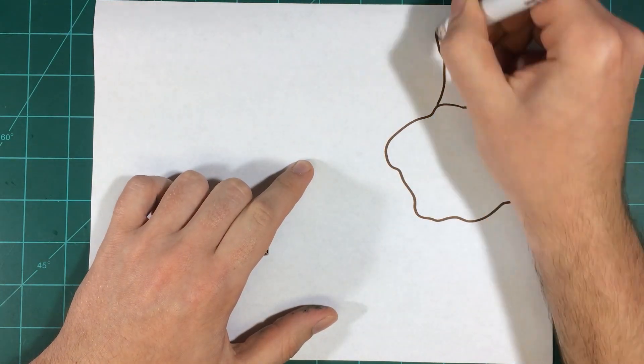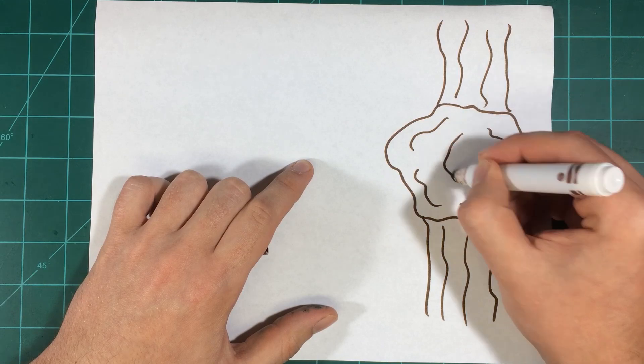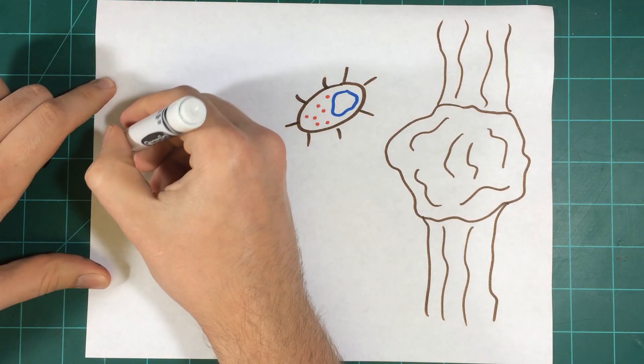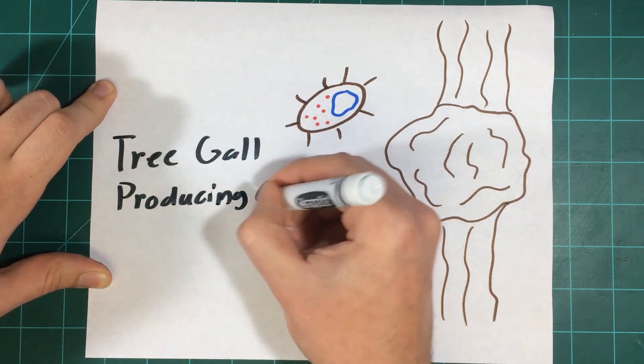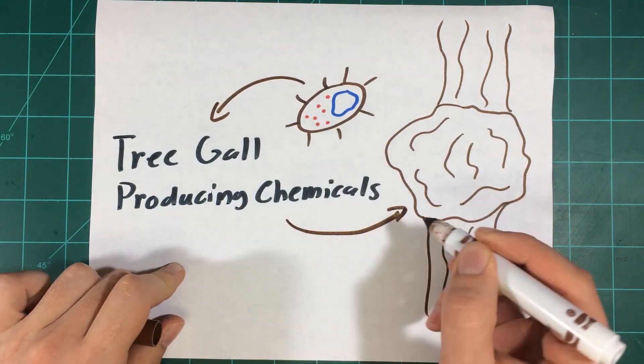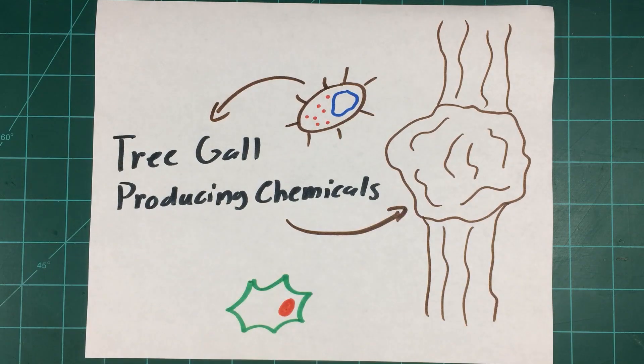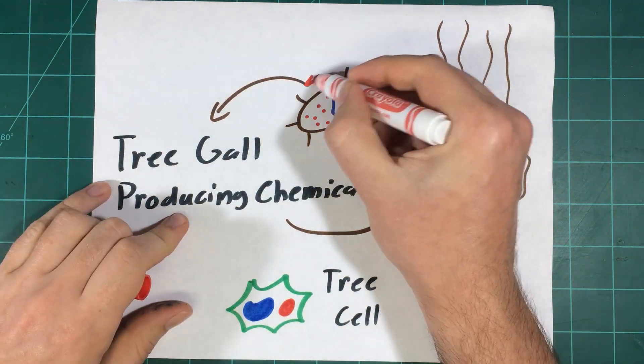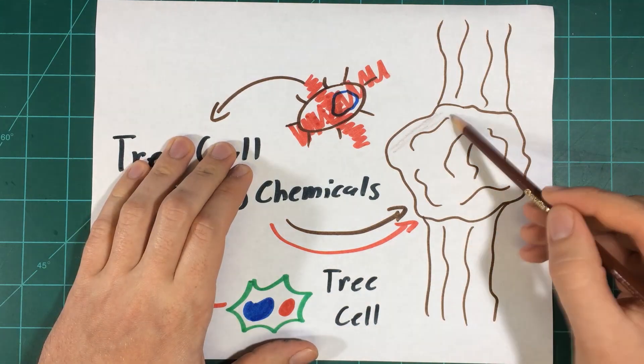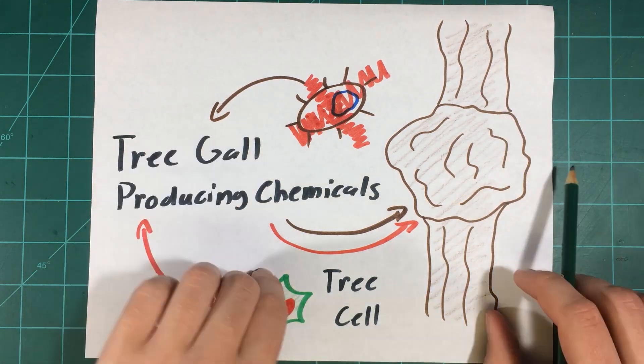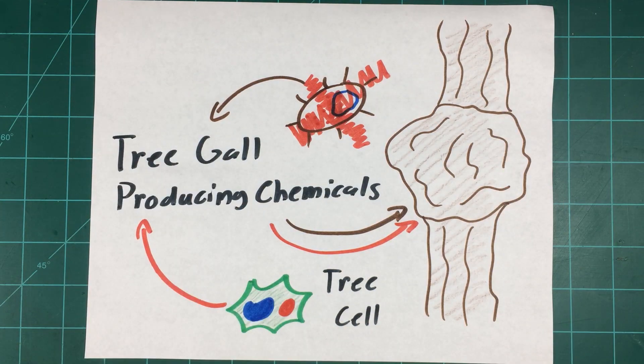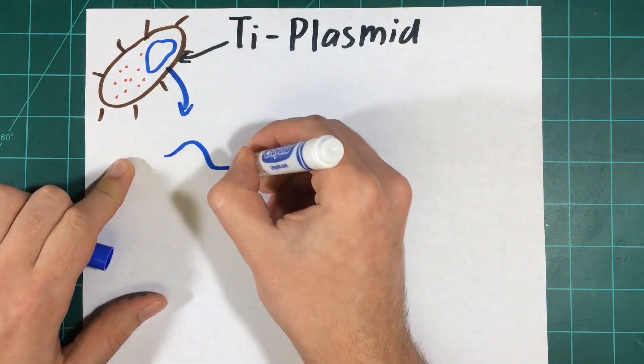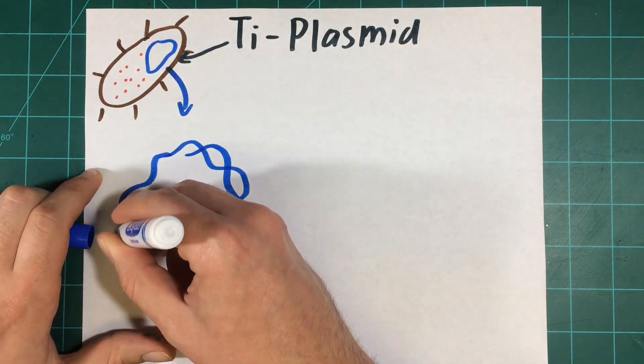Tumefaciens were recognized to be able to fundamentally change a cell's expression of its genetic material since nearly 100 years ago. They were first found forming galls on trees and scientists noticed that even if you were to sterilize the gall and get rid of the bacteria, the chemicals present around the tree cells forming the galls were still being produced. This told scientists that the tree cells had begun to express these chemicals themselves.